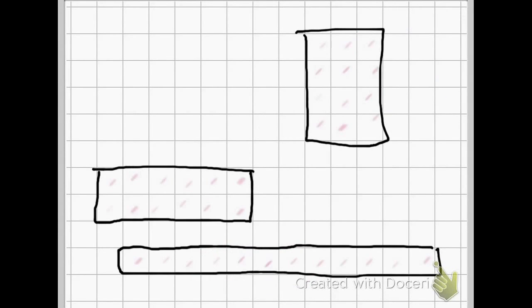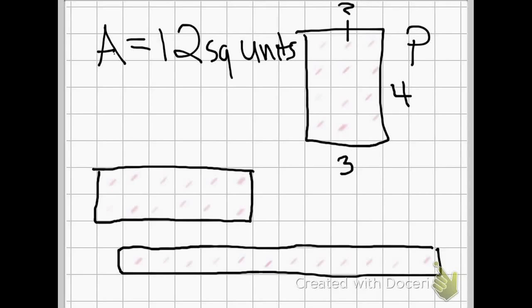Here I made some shapes and they all have the area of 12 square units and what I want to do is see the perimeter of each shape. So I know this side has 4 and this side has 3 which means across would be 3 and the other side 4. When I add them up, 4 and 4 is 8 plus 3 is 11 plus 3 is 14. The perimeter equals 14 units.